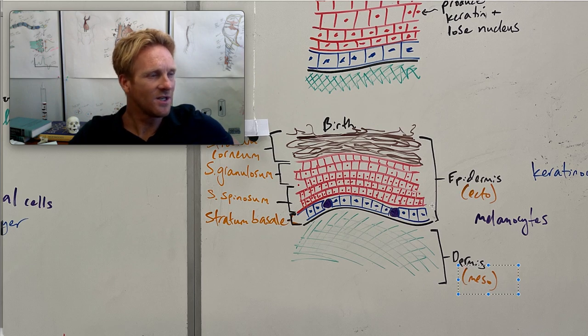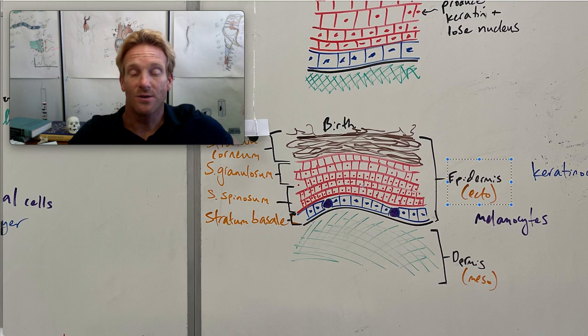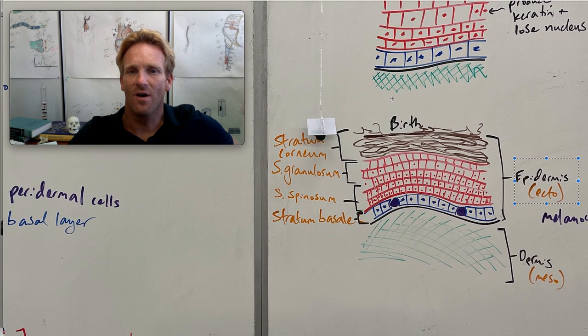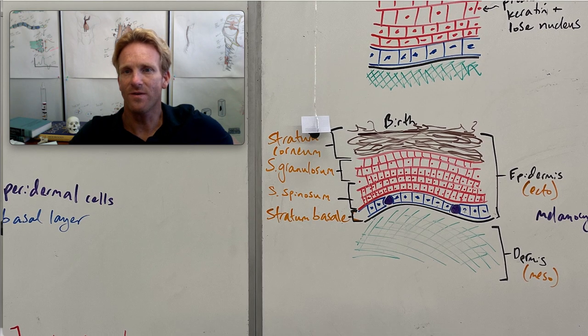Whereas the epidermis is derived from ectoderm and that is going to comprise of these keratinocytes which ultimately help to create this waterproof barrier to keep water in and keep bad things out, and also helps to protect the skin. All right, so that was a quick little overview. Hopefully that helped kind of clarify where the two layers of the skin came from. Thank you.